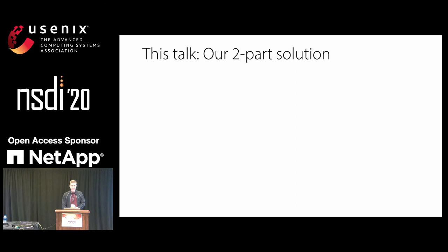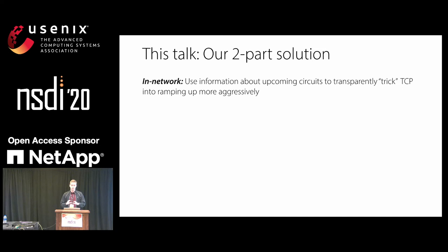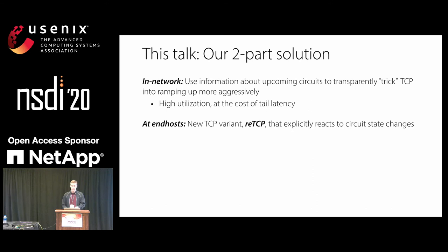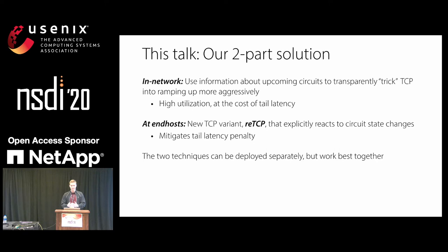The rest of this talk covers our two-part solution. First, a network-side technique where we use information about upcoming circuits to transparently trick TCP into ramping up — giving us high utilization, but at a cost in tail latency. Second, to mitigate that tail latency, we propose a new TCP variant called RETCP — Reconfigurable Data Center Network TCP — which explicitly reacts to circuit state changes to eliminate that tail latency penalty. These two techniques work best together: one gives high utilization, one gives good latency.